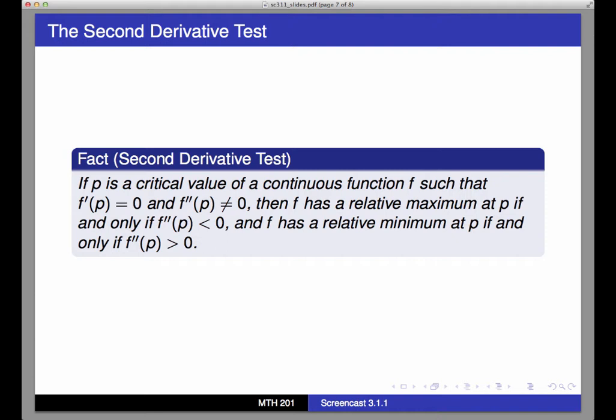Then f has a relative maximum at p if and only if f double prime of p is less than 0. And f has a relative minimum at p if and only if f double prime of p is greater than 0.